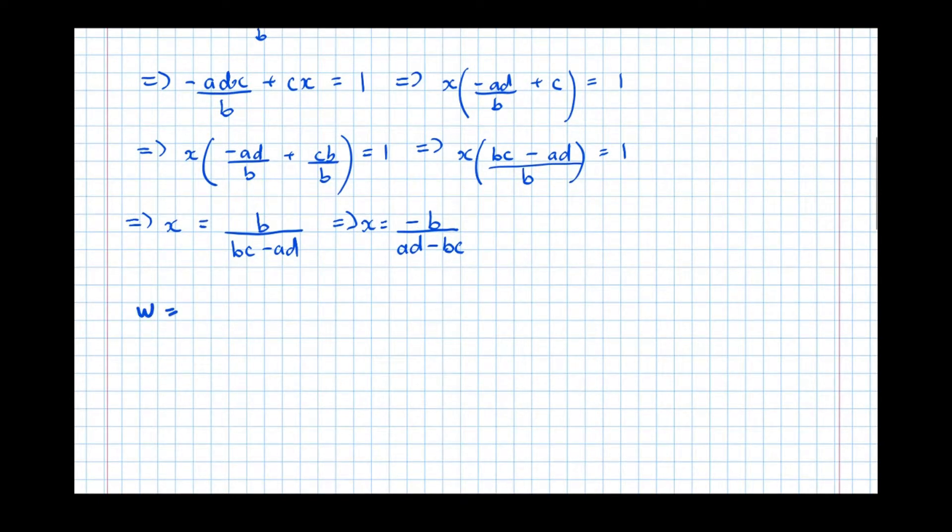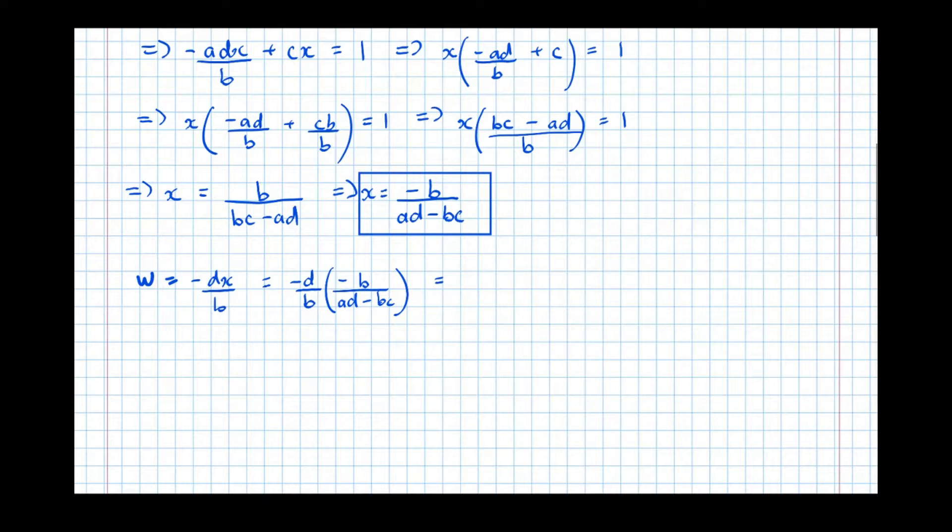So now taking our earlier derived expression for W, which was minus DX over B. So W equals minus DX over B. But we know what X is now. We know that X in terms of just ABC and D is minus B over AD minus BC. So we've got minus D over B times X. So it equals minus D over B times X, which was minus B over AD minus BC. What we can see here that if we multiply this out, we get minus D times minus B, which is DB over B bracket AD minus BC. And hopefully you can see here that the B on top and the B on the bottom cancel to give D over AD minus BC equals W.